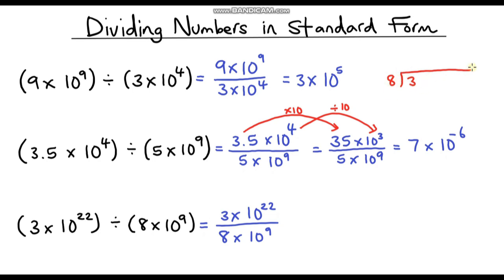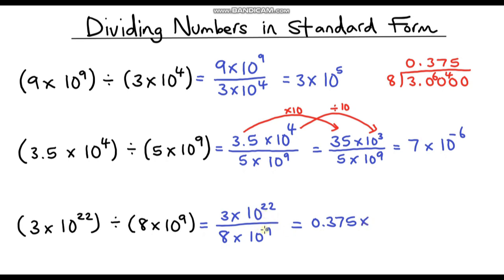Using the bus stop method: 8 into 3 doesn't go, so that's 0. 8 into 30 goes 3 times — 8 times 3 is 24, leaving 6 remainder. 8 into 60 goes 7 times — 8 times 7 is 56, leaving 4 remainder. 8 into 40 goes exactly 5 times. So 3 divided by 8 is 0.375. That gives us 0.375 multiplied by 10 to the power of 22 minus 9, which is 13.